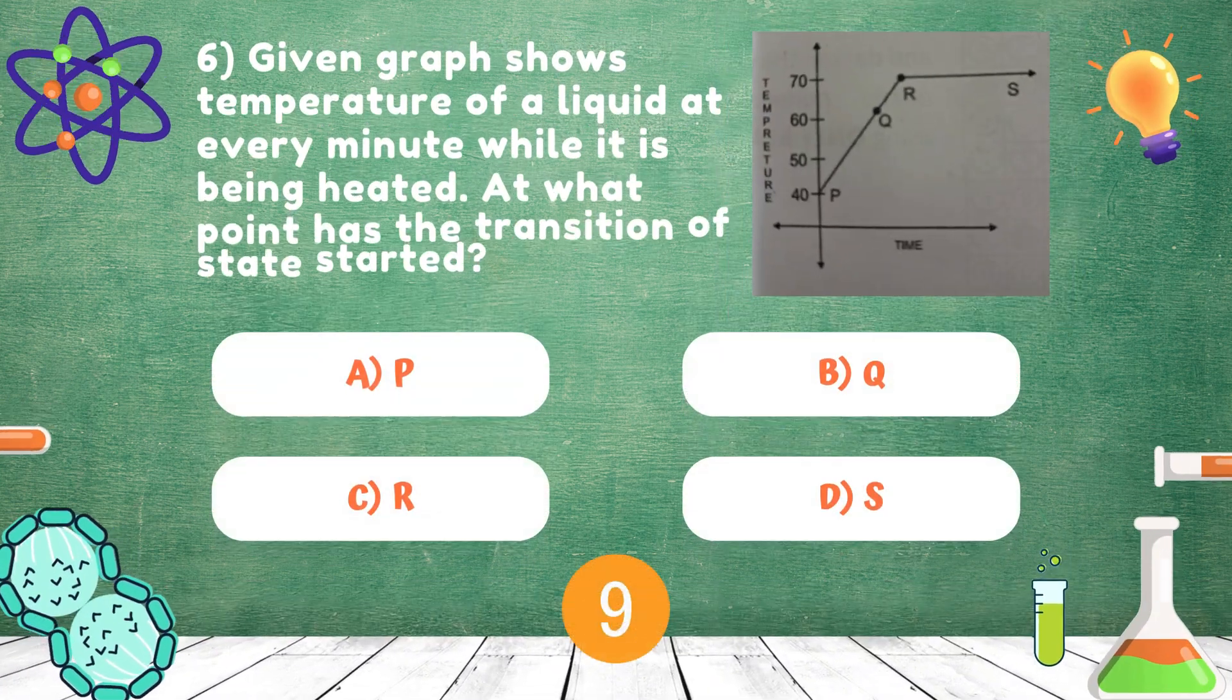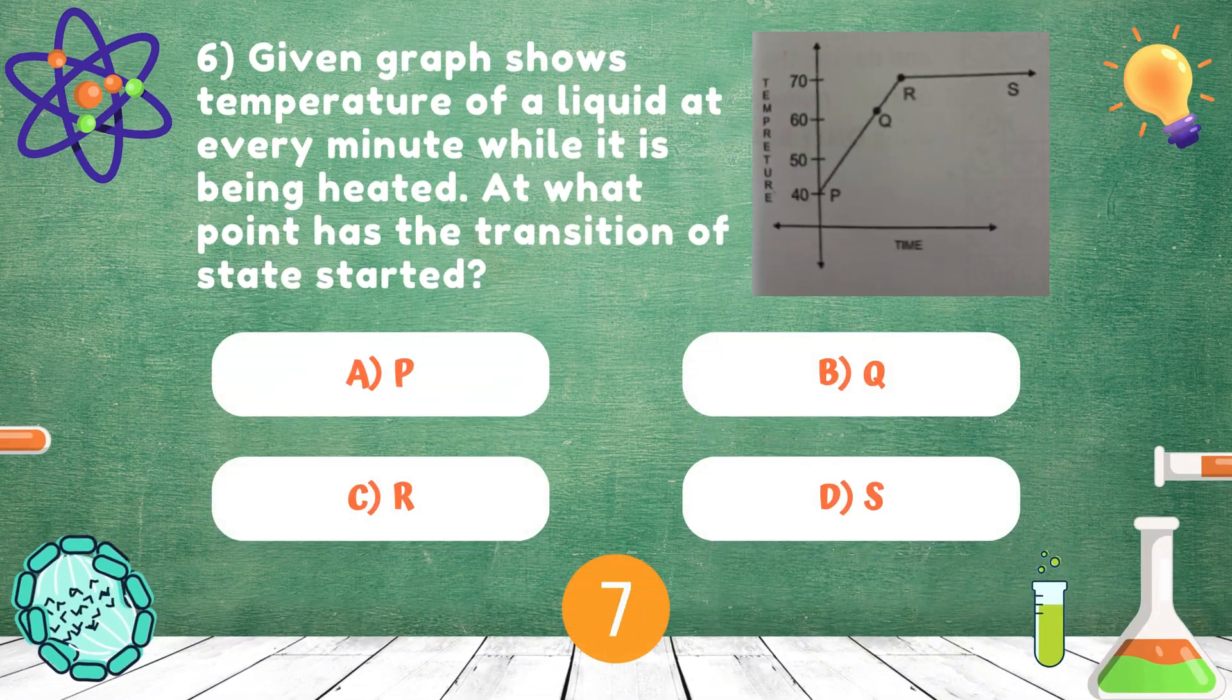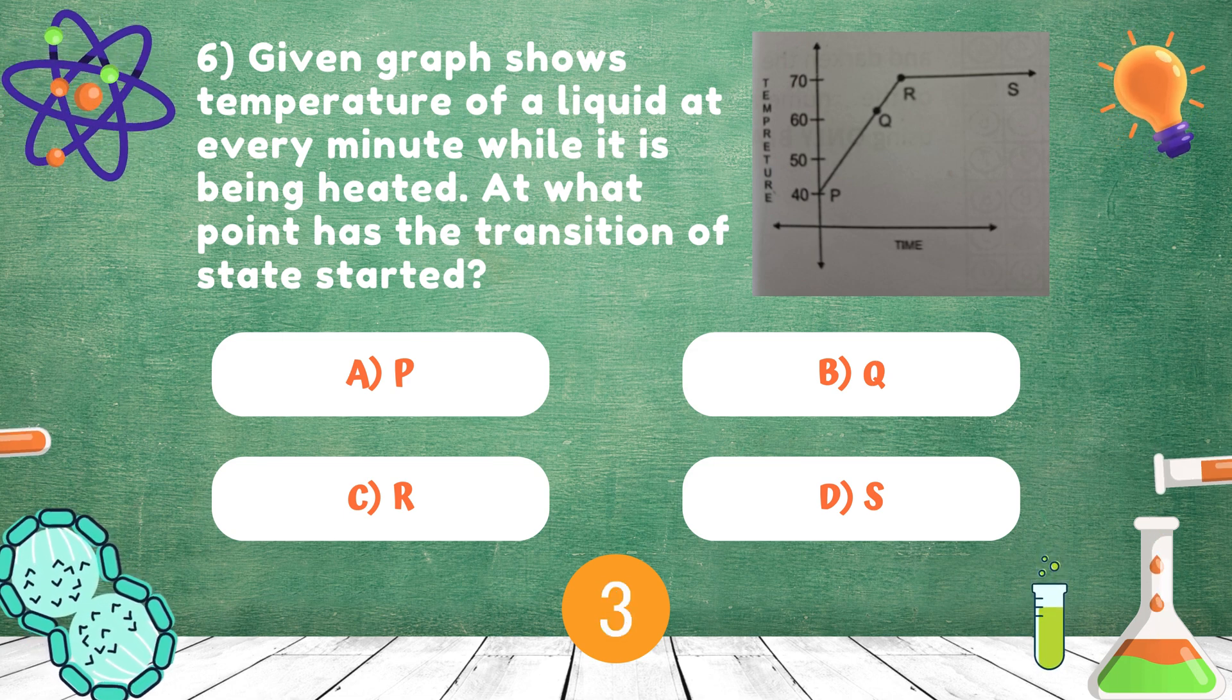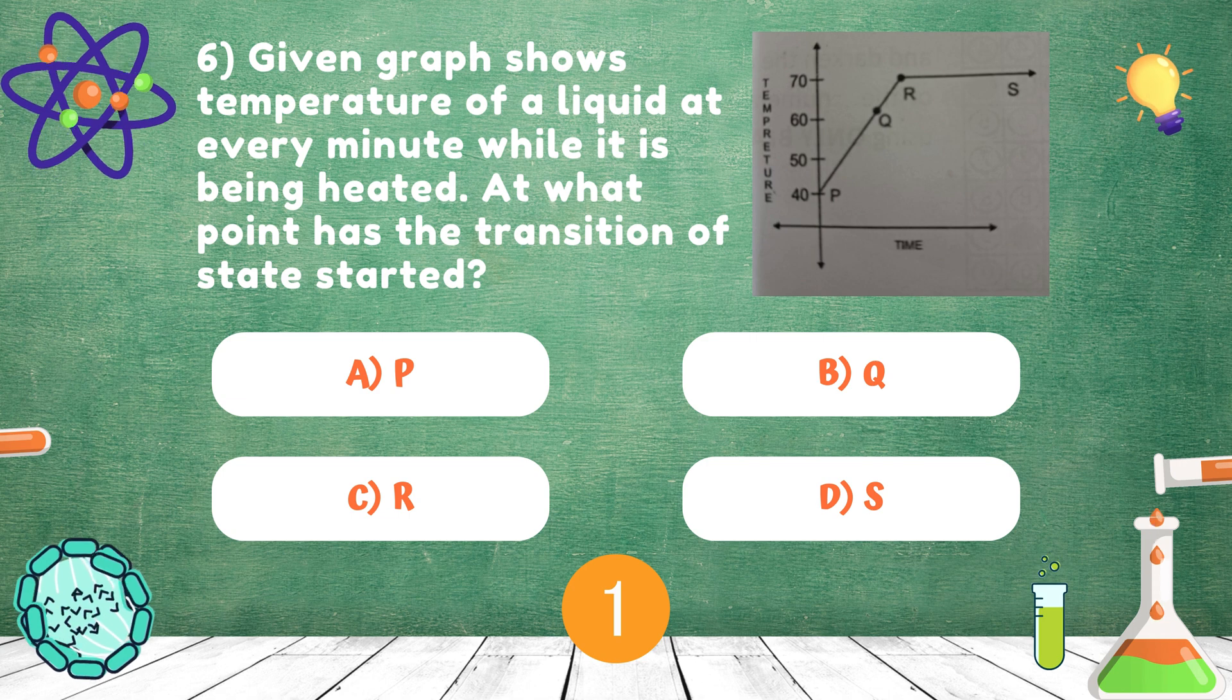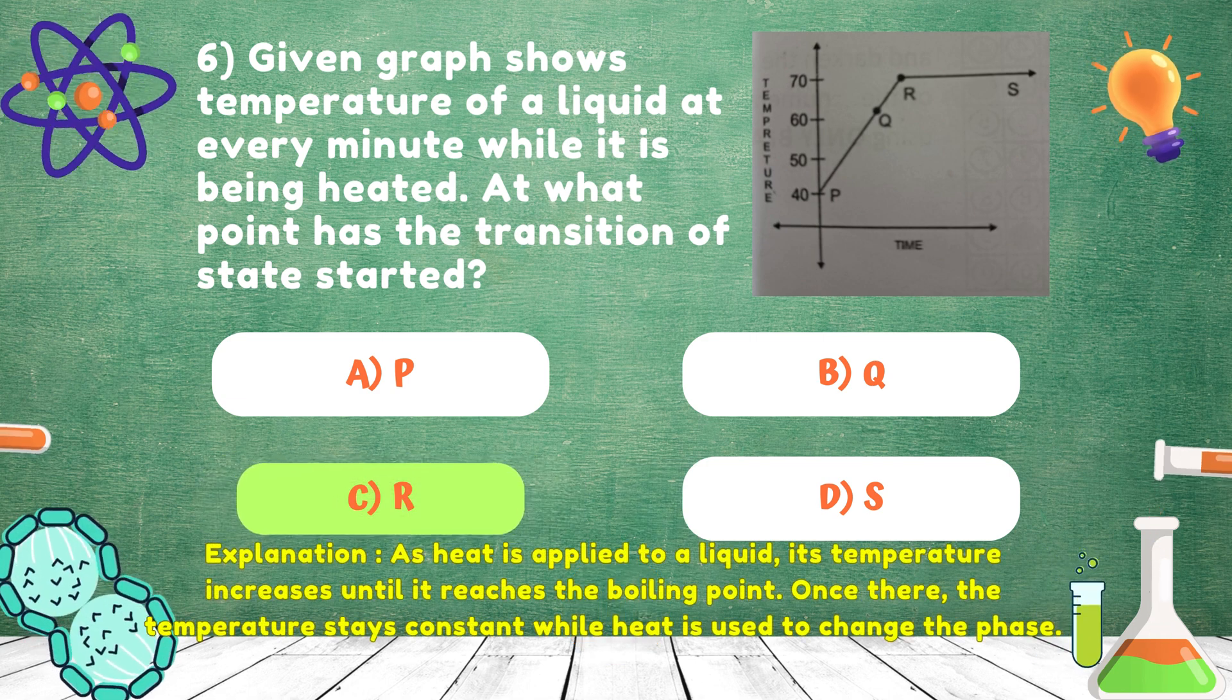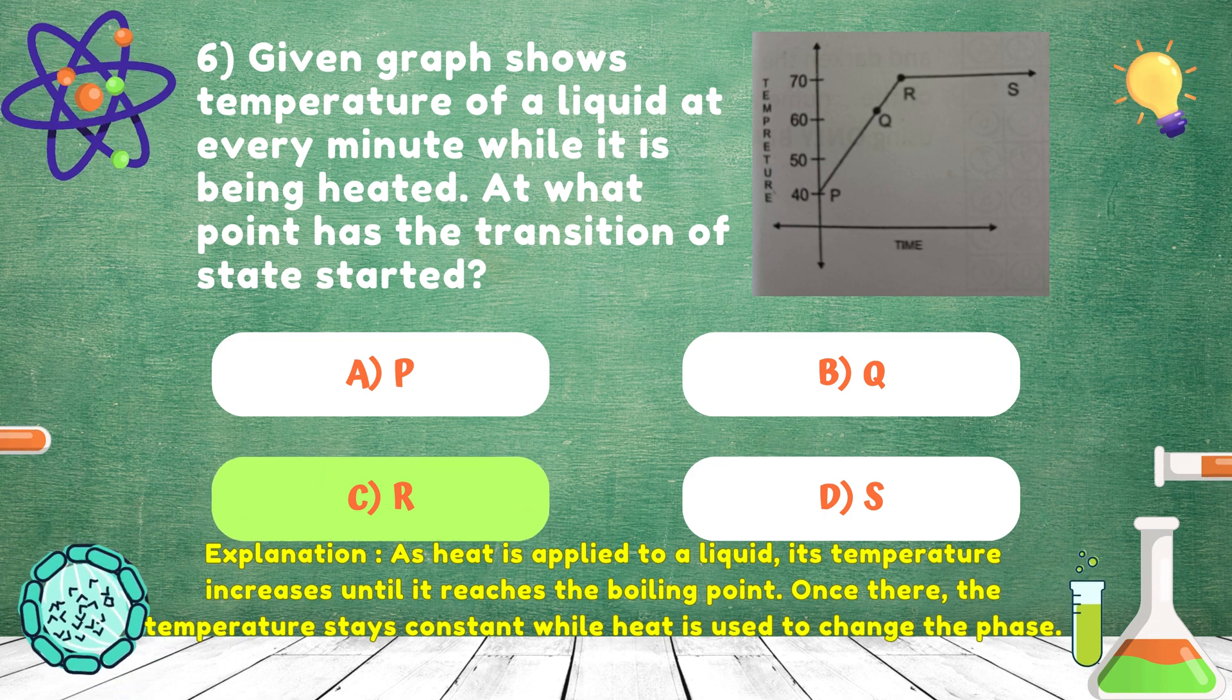Given graph shows temperature of a liquid at every minute while it is being heated. At what point has the transition of state started? Answer is R.